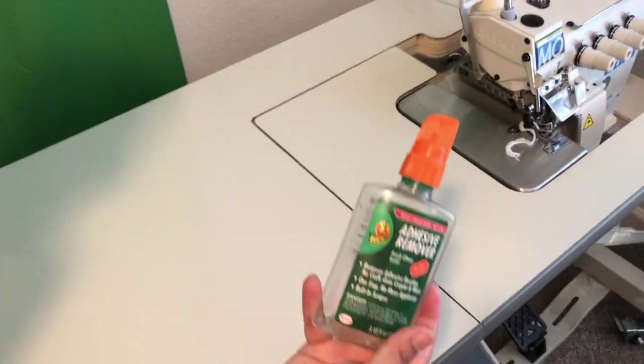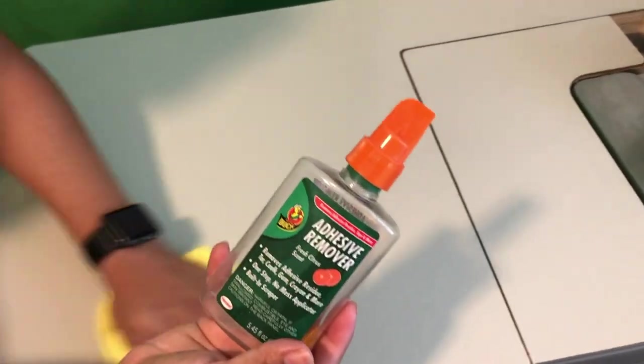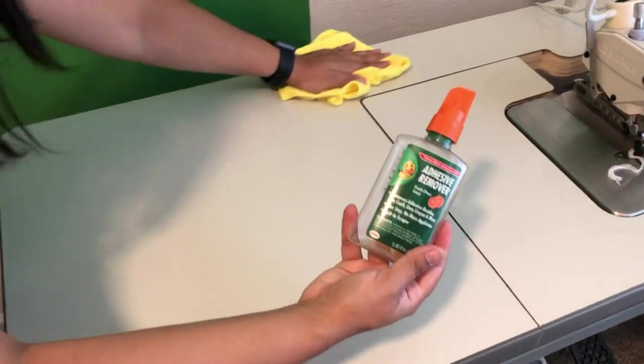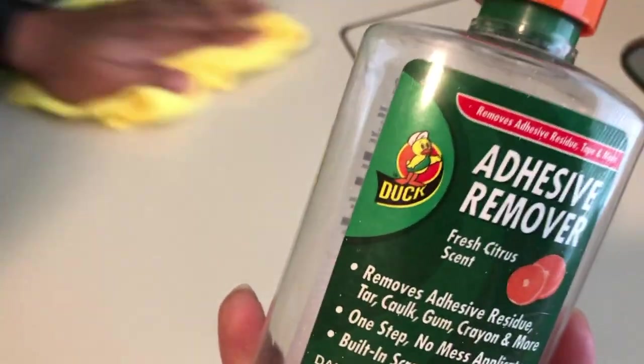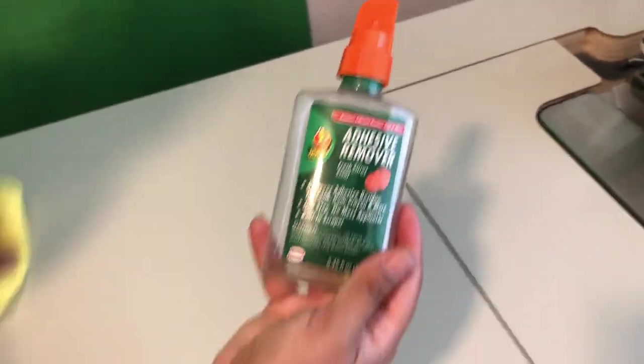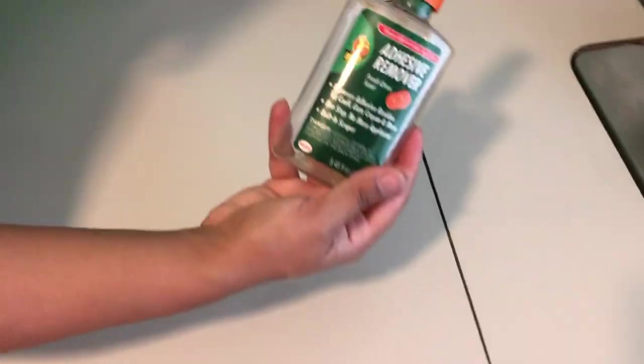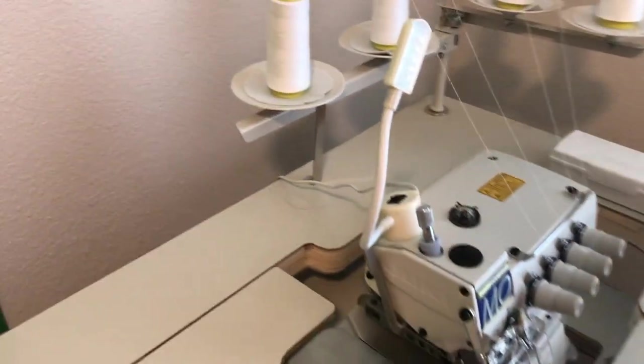Alright, so if you want to clean off that residue from the plastic covering, just use some adhesive remover, whether it's goof off or I think this is from Harbor Freight, but just some adhesive remover and it'll take that off. Okay, so now it's completely done.